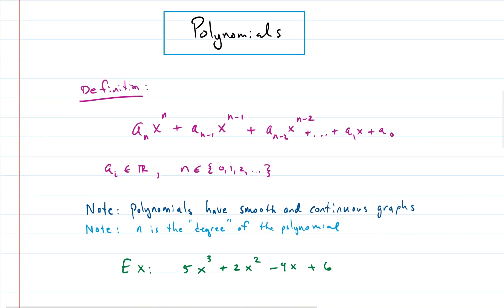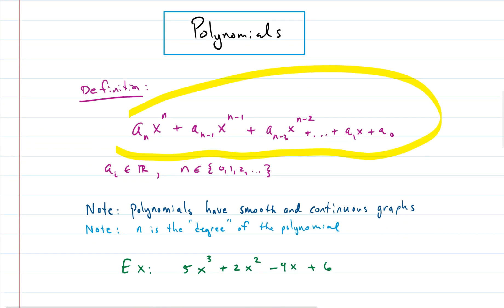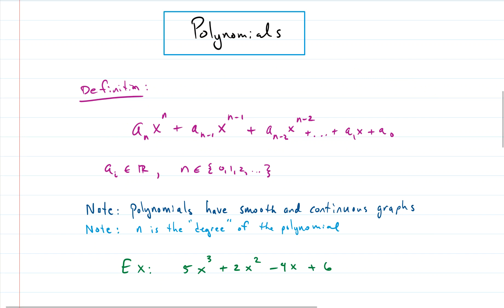So what is a polynomial? Here's the mathematical definition — it looks a bit involved but it really isn't bad. We have a bunch of exponents. There's an implied exponent of one on the x term, and an implied x to the zero at the end — and x to the zero is just one. The exponents start from the highest, n, and decrease by one all the way down to zero. So the only possible exponents in a polynomial are zero, one, two, three, four, five, and so on — no negatives, no fractional exponents.